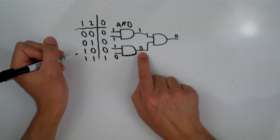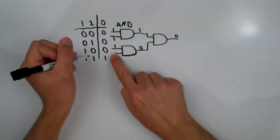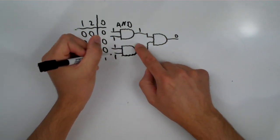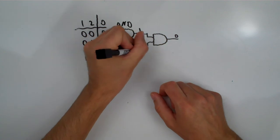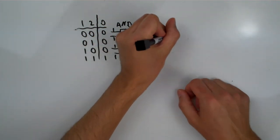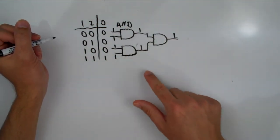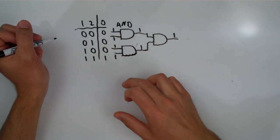The only way to change this other 0 to a 1 would be to change this other input down here to a 1. That would change this one to a 1, and then it would change the output to a 1. So this is how you can chain your gates together to get more inputs.